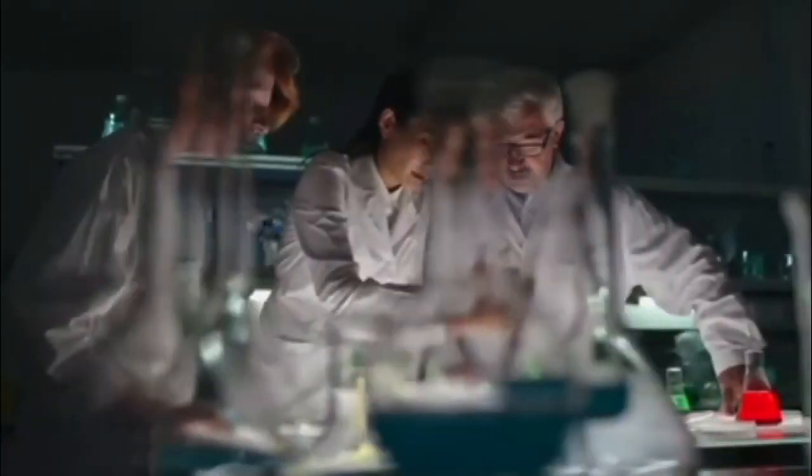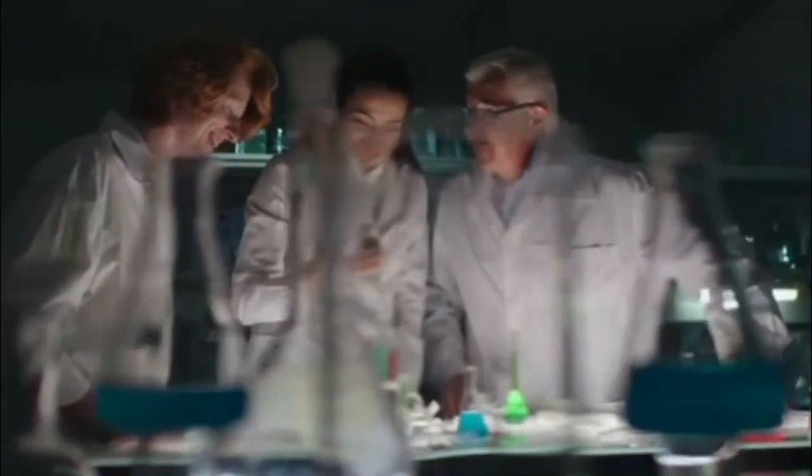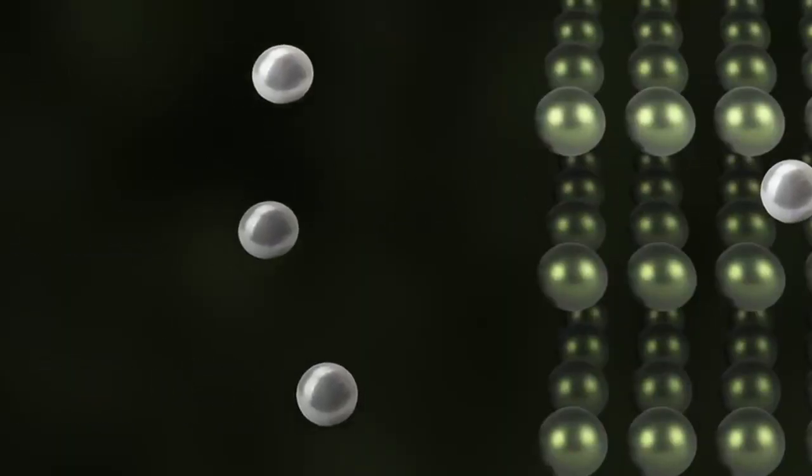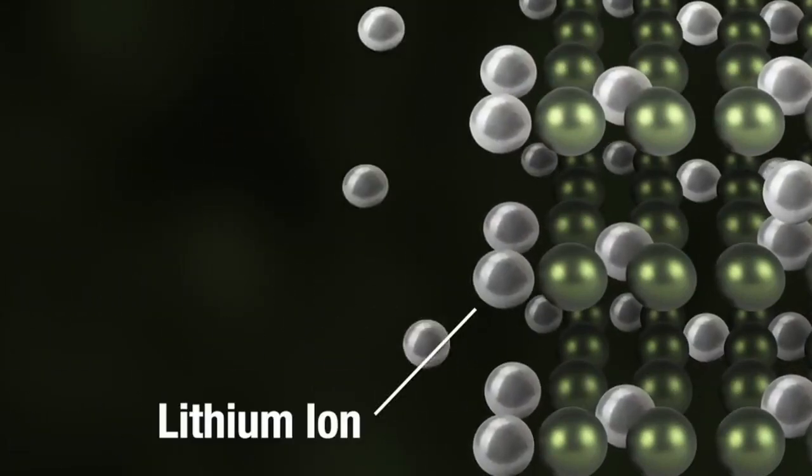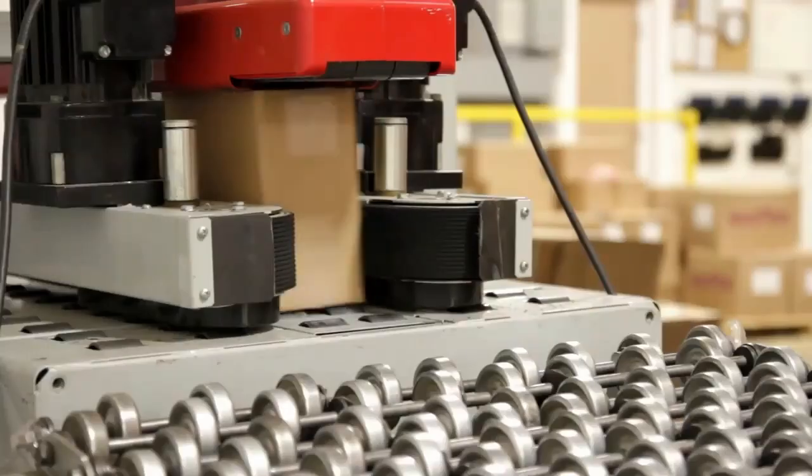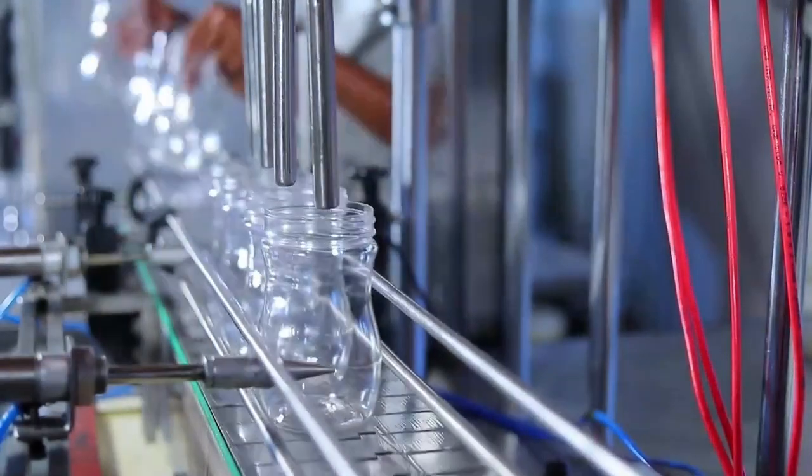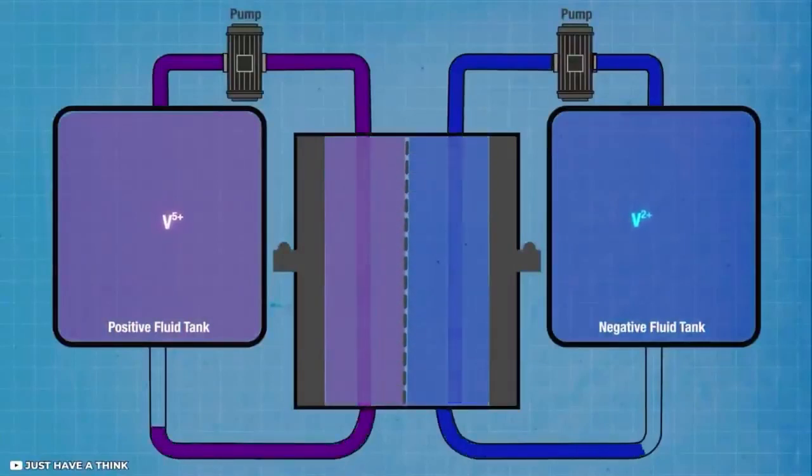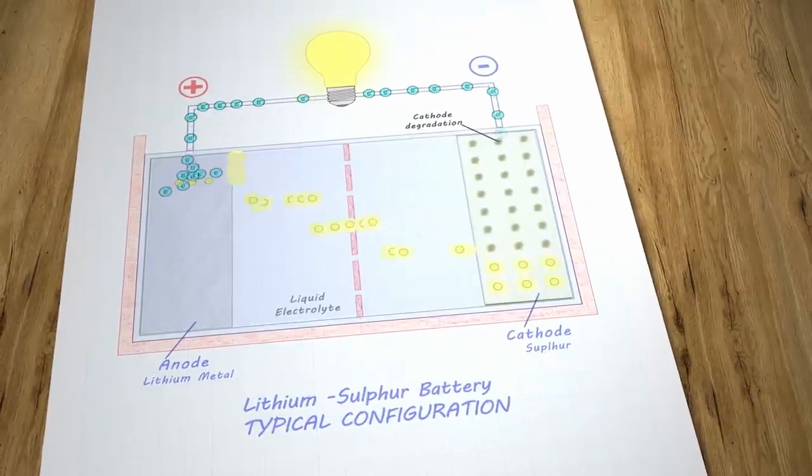In a separate study, engineers from Philadelphia Drexel University set out to slow down the chemical process that occurs when the battery charges and discharges, which produces polysulfides. But what they actually discovered was amazing! A sulfur chemical phase that essentially halts battery deterioration. Monoclinic gamma phase sulfur is the name given to this chemical phase, which has only ever been seen in the lab at temperatures over 95 degrees Celsius or 203 degrees Fahrenheit. It's never been observed at room temperature before.